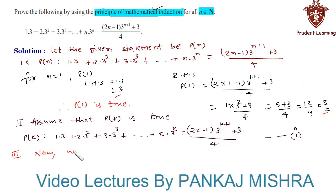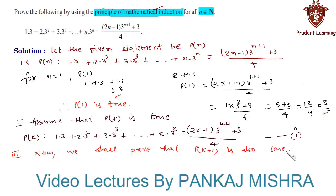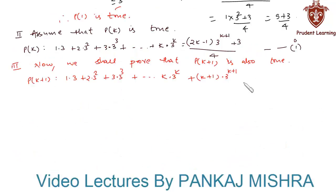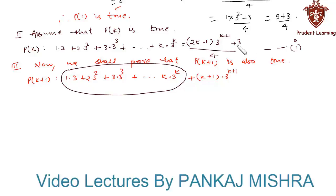We shall prove that P(k+1) is also true. P(k+1) states that 1·3 + 2·3² + 3·3³ + ... + k·3^k + (k+1)·3^(k+1). From equation 1, we substitute the value of the first k terms as (2k − 1)·3^(k+1) + 3, divided by 4.